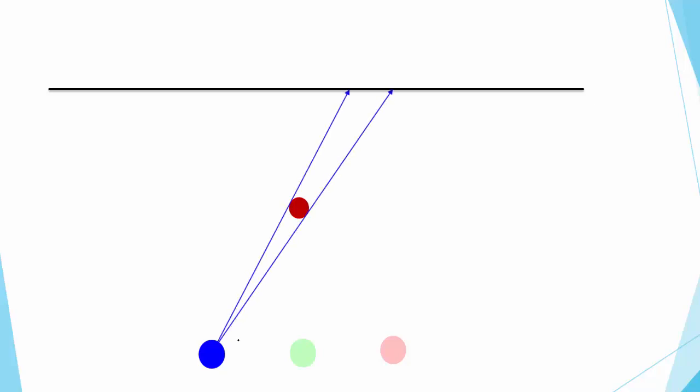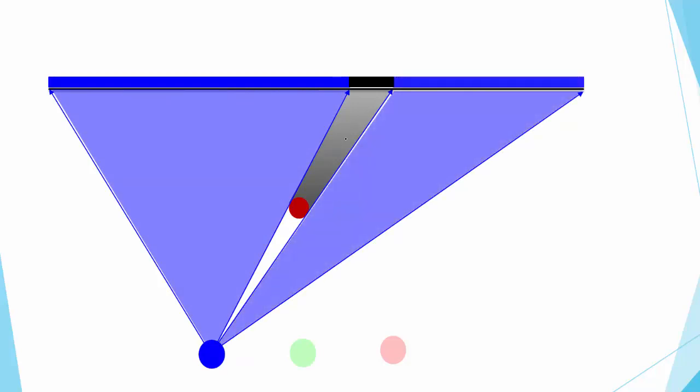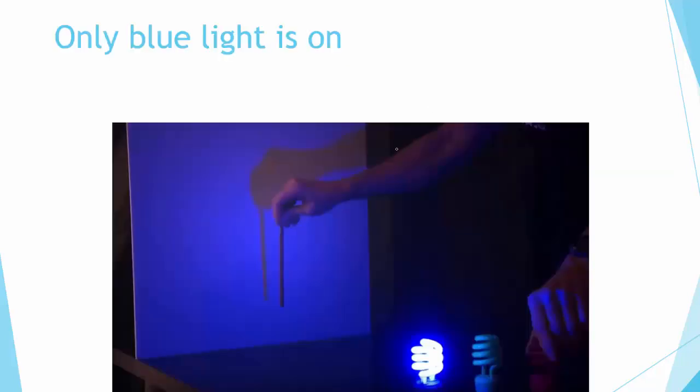You will create a shadow on the screen over here because the blue light is not able to reach this part, but the blue light is able to reach other parts of the screen. So this part will be blue and this part will also be blue. On the screen you will see a combination of blue, then a shadow, and blue. The blue light creates a blue screen with a shadow over here.